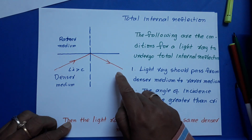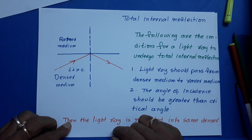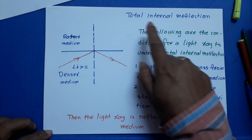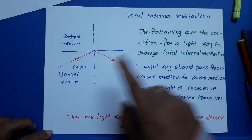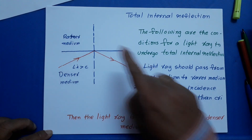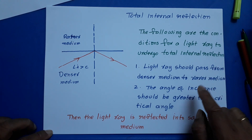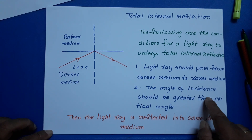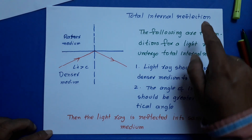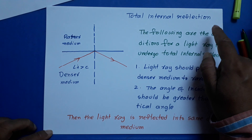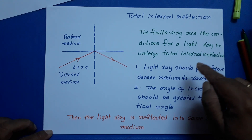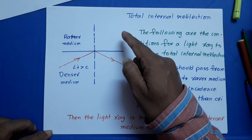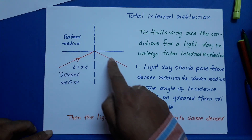For total internal reflection, there are two conditions. What are the conditions for total internal reflection? Condition number one: light ray should pass from denser medium into rarer medium. What is the second condition? Angle of incidence should be greater than critical angle. These two are the important conditions for total internal reflection to take place. If these two conditions are fulfilled, the light ray should not enter into rarer medium — it is reflected into the same denser medium.